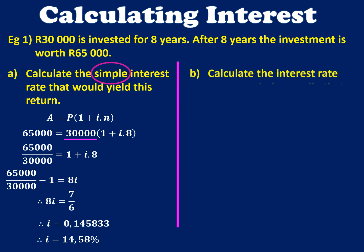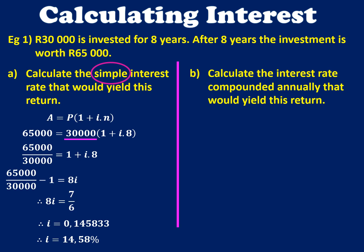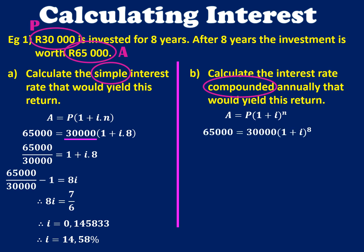Let's take the same example but figure out how much compound interest would give us 65,000 Rand after 8 years. With the compound interest formula, the number of years is an exponent. Again, 65,000 Rand is the A value and 30,000 Rand is your P value. Substituting in, we get 65,000 is equal to 30,000 times (1 plus I) to the power of 8.